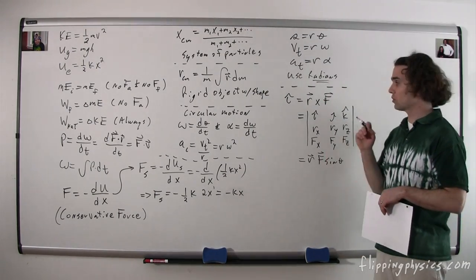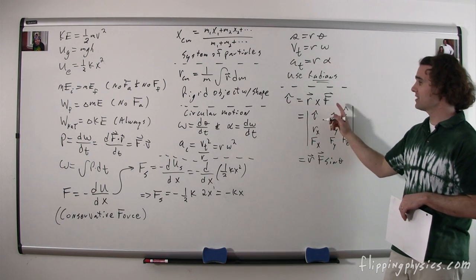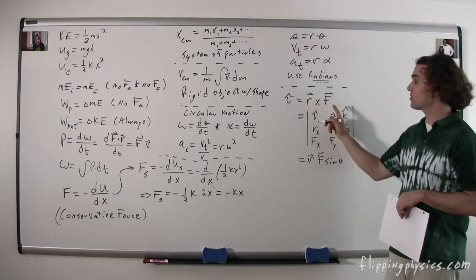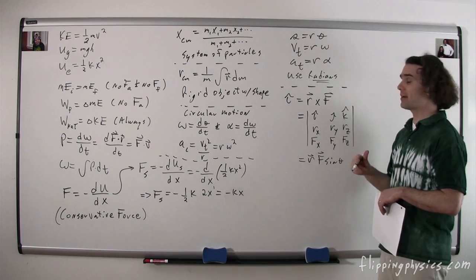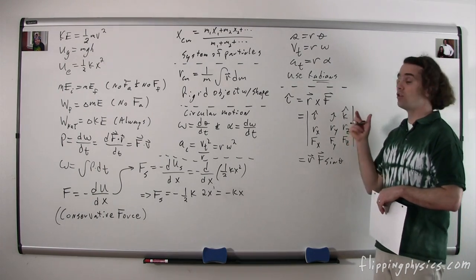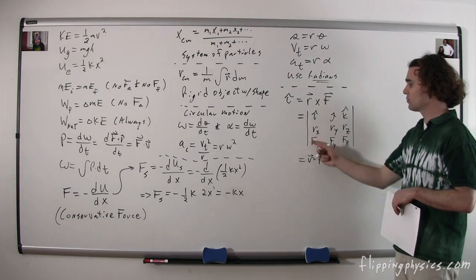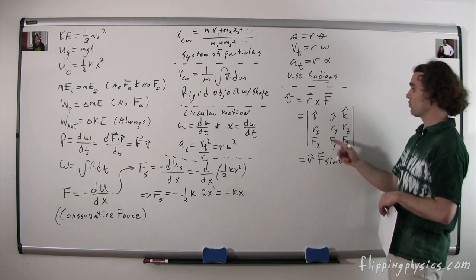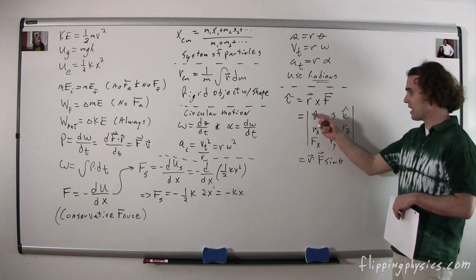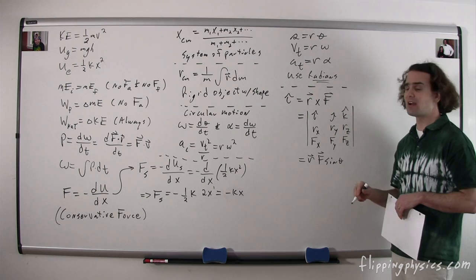Torque, or lowercase tau, is equal to R cross F — the lever arm cross product with the force. Remember, with the cross product it is a vector and the order does matter, so it is R cross F. You need to remember how to use the unit vectors and matrices to solve that, or if you're not using unit vectors, it's just R F sine theta.